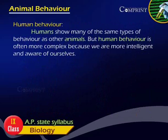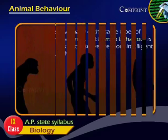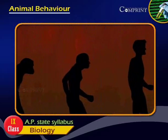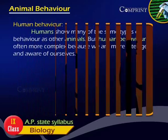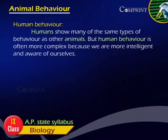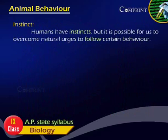Human Behavior. Humans show many of the same types of behavior as other animals, but human behavior is often more complex because we are more intelligent and aware of ourselves. Humans have instincts, but it is possible for us to overcome natural urges to follow certain behavior.